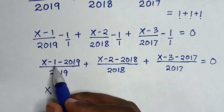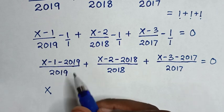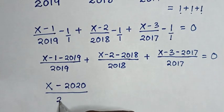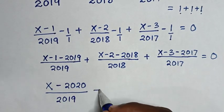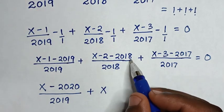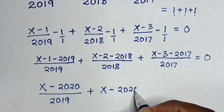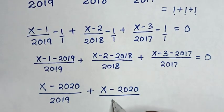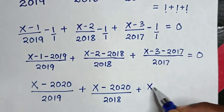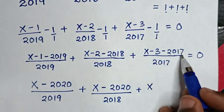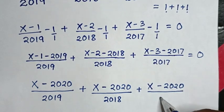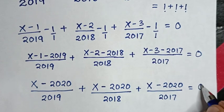In the next step, (x minus 1) with negative 2019 gives negative 2020, over 2019. Then plus (x minus 2) with negative 2018 gives negative 2020, over 2018. Then plus (x minus 3) with negative 2017 gives negative 2020, over 2017, is equal to 0.